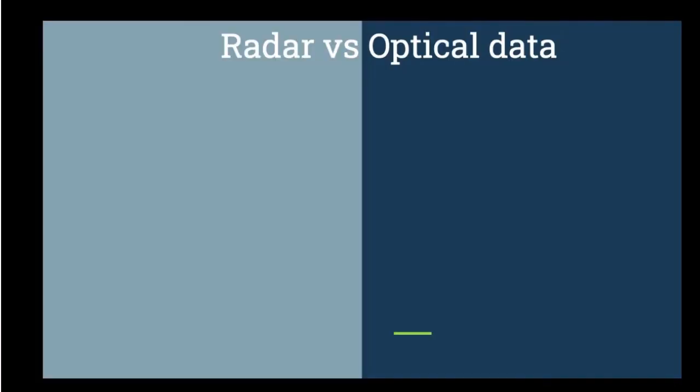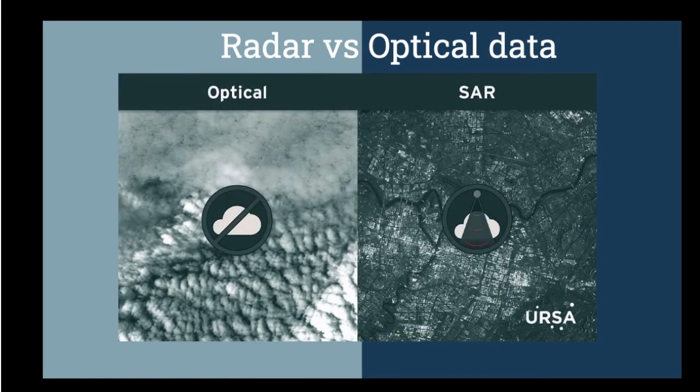Here are some images as an example to show the difference between radar and optical image. On the left you can see an optical image which cannot see through the clouds, and on the right you can see a radar or SAR image which can penetrate through the clouds and we can see the earth surface at the same time.